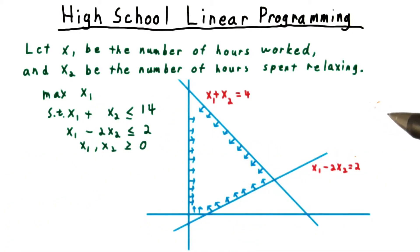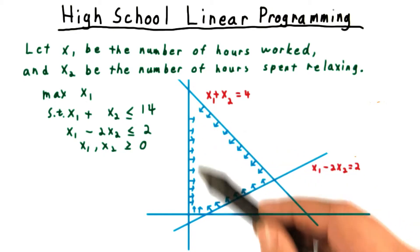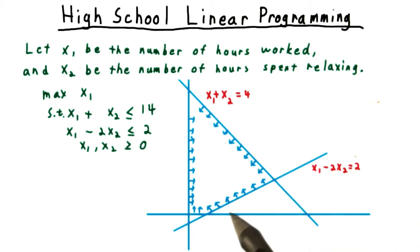Now in high school, your teacher probably asks you to begin by graphing the inequalities. When we do this, we see that the constraints generate the following polytope. Perhaps your high school teacher didn't use the word polytope, but that's what this region here is. Each constraint restricts the solution to half of the plane. That's called a half space, and the polytope is an intersection of half spaces.